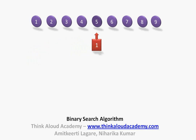We go ahead and check whether 1 is equal to 5. Since 1 is not equal to 5, we need to decide what to do. Since 1 is less than 5, we need to search in the left half. So we restrict our search criteria to the left half of this array.